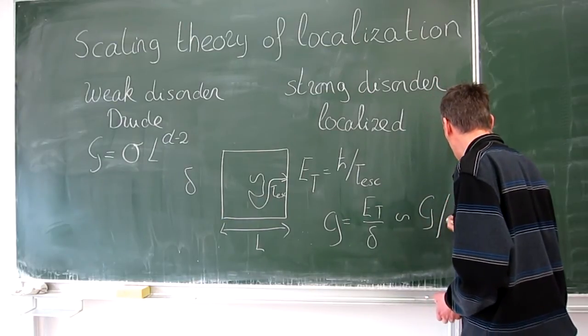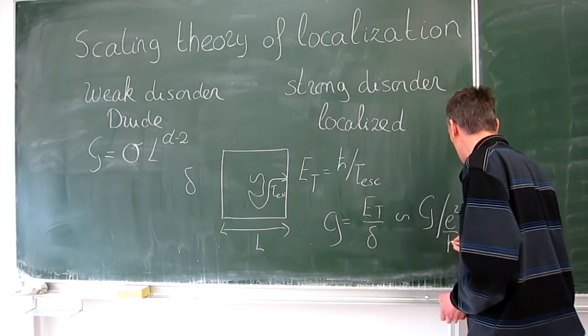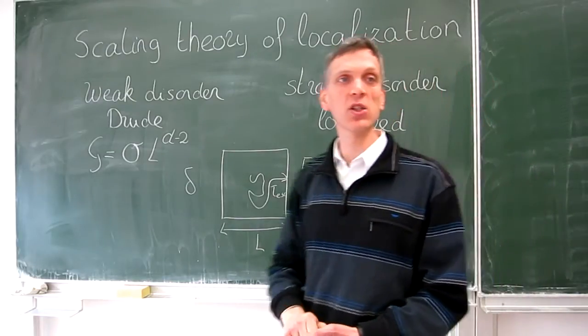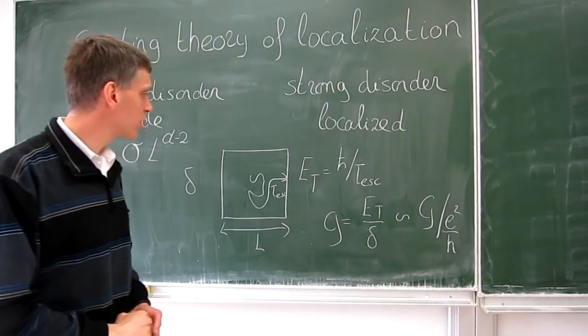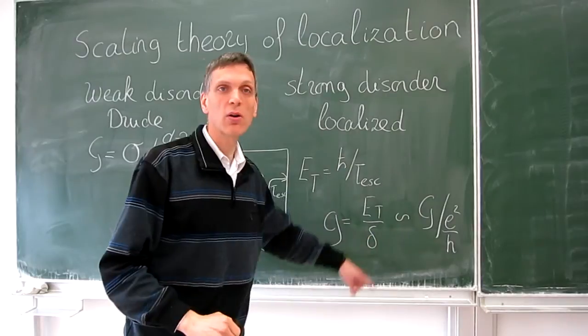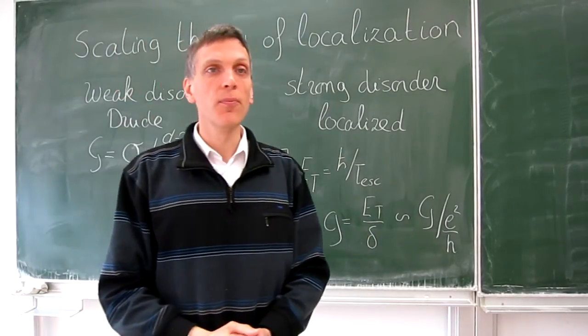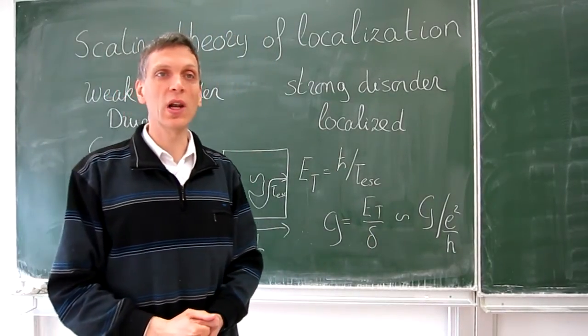You will learn that it is essentially the block's conductance g up to a factor of e squared over h. So small g is roughly g divided by e squared over h. The Thouless relation, g is E Thouless over delta, describes to what extent wave functions are localized.